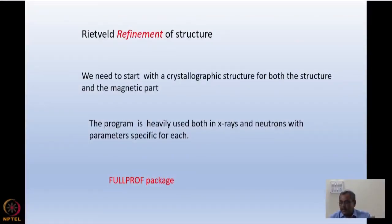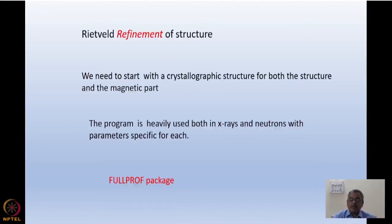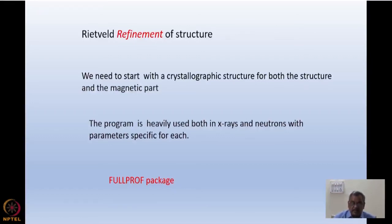The Rietveld refinement technique is the most widely used technique for magnetic structure refinement. The word 'refinement' is marked in red because this is not an ab initio solution for crystallographic and magnetic structure. Rather, we start with a given magnetic and crystallographic structure and then keep refining it. We need to start with the crystallographic structure for both the structural and magnetic parts, and then we refine from that starting point.